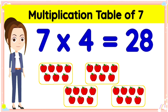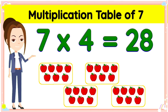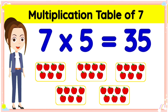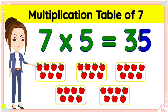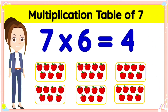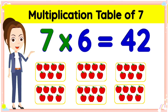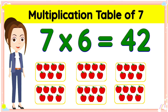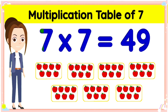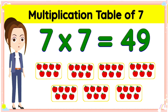Seven fours are twenty-eight. Seven fives are thirty-five. Seven sixes are forty-two. Seven sevens are forty-nine.